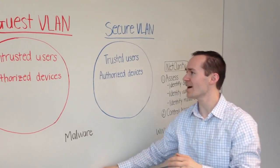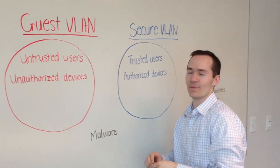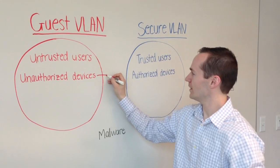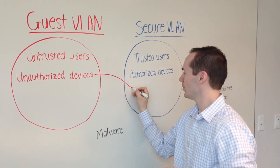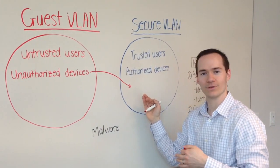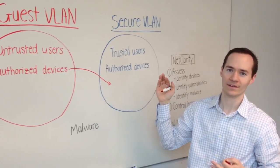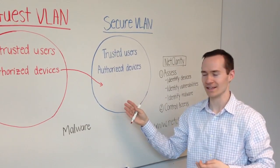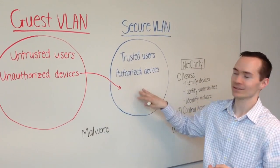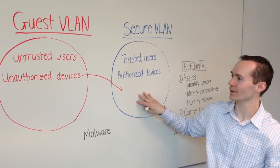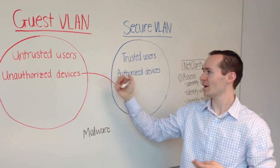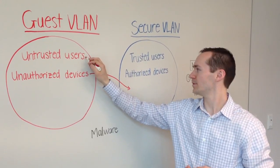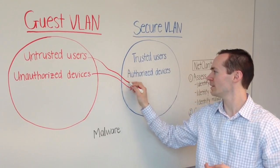But the reality is, over time, there's a migration that occurs. You have people going home and putting the wireless credentials on their iPads and iPhones, bringing them in the next day — so now they have access to the secure network. You may also, over time, inadvertently — or perhaps through a hacker — have untrusted users coming onto this network.